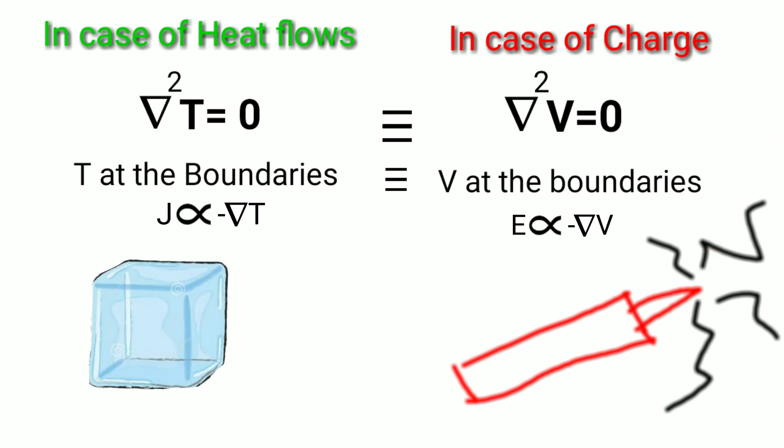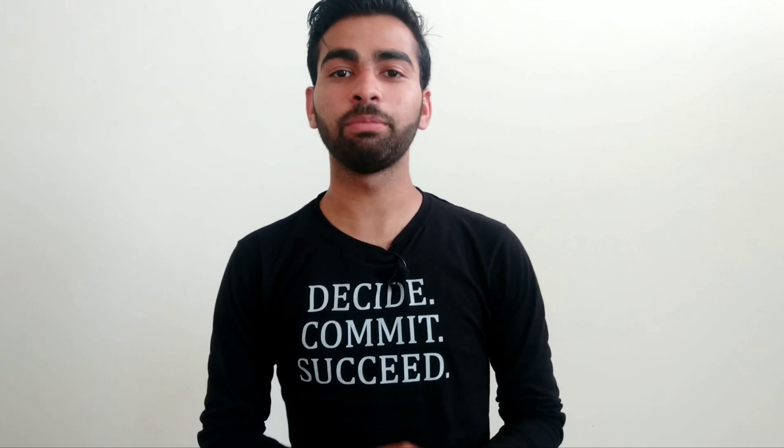Similarly, in the case of ice cube, near the edges, the gradient of T becomes very large. So heat flow will be very large at the corners. That's why the ice cube always starts melting from the corners.